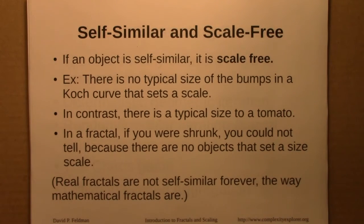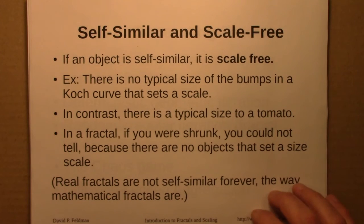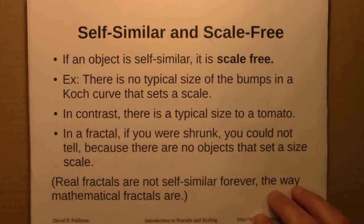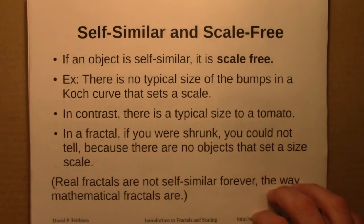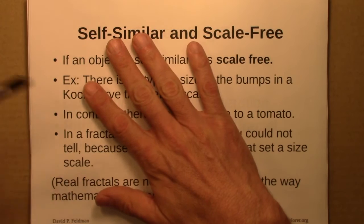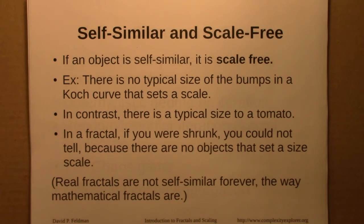This idea of self-similarity is related to being scale-free. If an object is self-similar, we say it's scale-free. For example, there's no typical size of the bumps in a Koch curve — there's no clue as to the scale. In contrast, for a tomato, or a hand, or a pencil, all of those have a typical size, and that sets a scale.